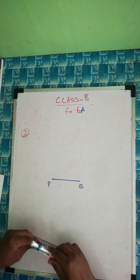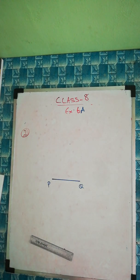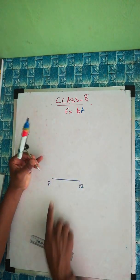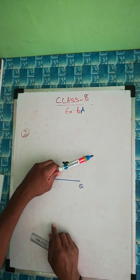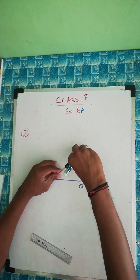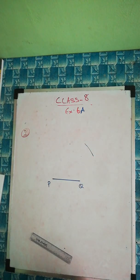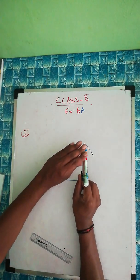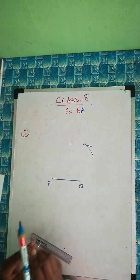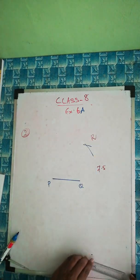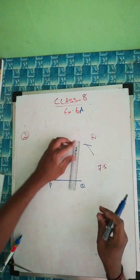PQ is 5 cm, so PR being 10 cm means we take it by compass from P. From P, take 10 cm and cut an arc to locate R. Then from Q, take QR as 7.5 cm and cut an arc. The intersection gives us R. Join QR and PR.